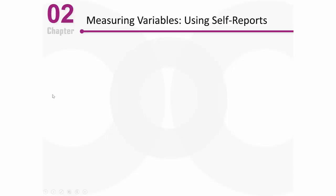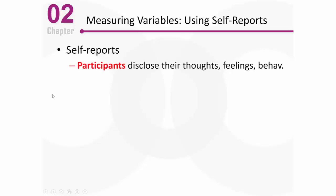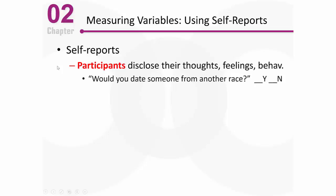Let's talk about how specifically we measure things, because we use different techniques. One technique is using self-report scales. In self-report, participants disclose their thoughts, feelings, and behaviors — remember the ABCs: A for affect (feelings), B for behaviors, C for cognition (thoughts). So we're just asking people how they think, how they feel, what they do. A social psychologist interested in interracial dating might just ask: would you date someone from another race? Yes or no — very straightforward.